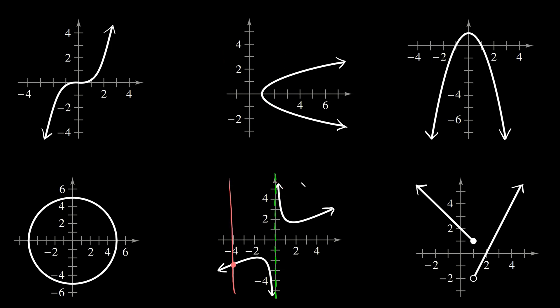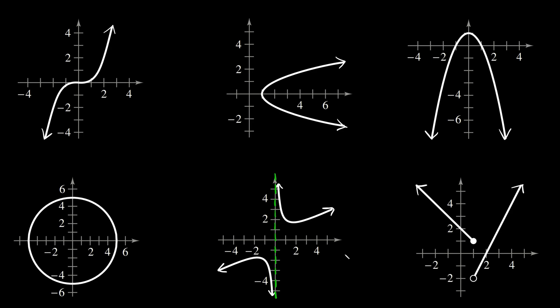This graph will just get closer and closer to that green asymptote line but never actually touch it. So again, it doesn't matter where I draw this vertical line — I can draw it there, just a single point. I can draw it on this side of the graph, again just a single point. So this graph is a function.